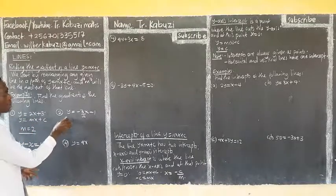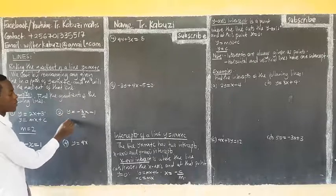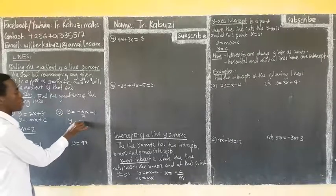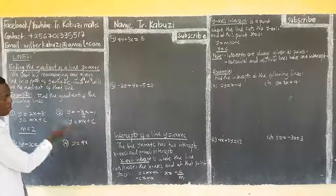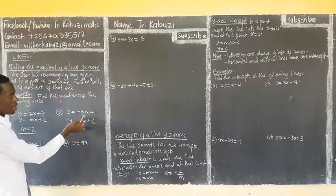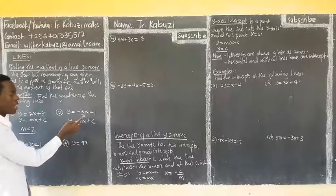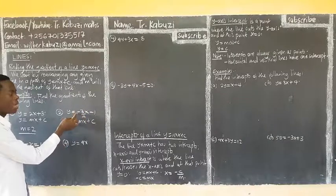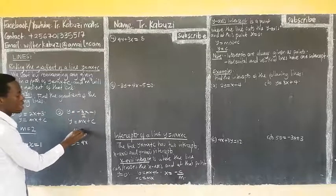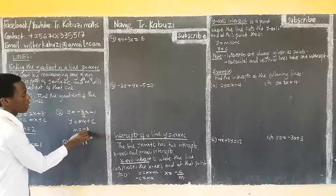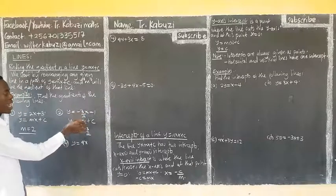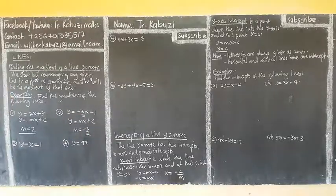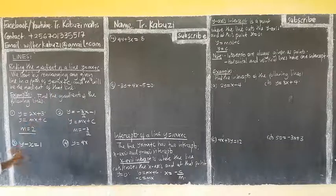Now if I compare this one also, the coefficient of y is 1, so I can compare with y equals mx plus c. When you compare, the coefficient of x is always our gradient. So here the coefficient of x is negative 3 over 2. So our gradient there is negative 3 over 2. You take it with the sign, and this one is a fraction.